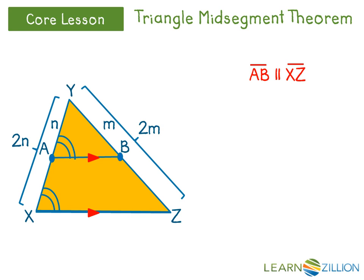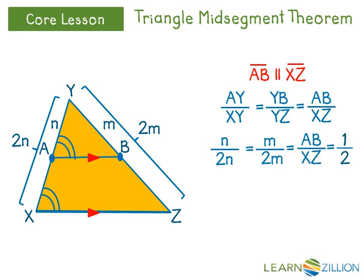Also, because the triangles are similar, their sides are proportional, which gives us AY over XY equals YB over YZ equals AB over XZ. Substituting in the values of N and M, we get that N over 2N equals M over 2M, which equals AB over XZ, which equals one-half. This means that AB equals one-half of XZ. Thus, we have proven that segment AB is both parallel to and half the length of segment XZ.